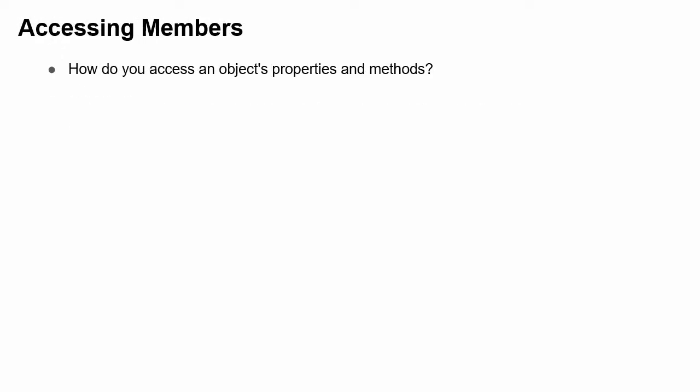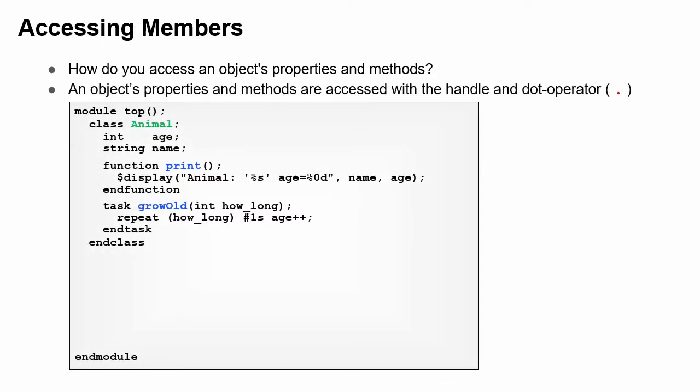How do you access those properties and methods? In Verilog, you know how to make hierarchical references with instance names and the dot operator, such as top.i1.out. In SystemVerilog, you put a handle and a dot before the class members. Here's the animal class.